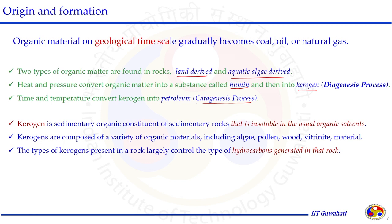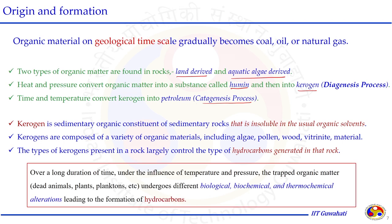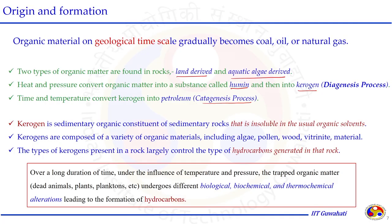Kerogen is broadly classified into three types — Type 1, Type 2, and Type 3 — based on elemental analysis. The type of kerogen present in a particular rock controls what type of hydrocarbon fluid will be produced by that rock. Overall, over a long time, the influence of temperature and pressure converts the trapped organic material through biological, biochemical and thermochemical processes to the formation of hydrocarbons — oil and gas. The process of converting kerogen to petroleum is called catagenesis.